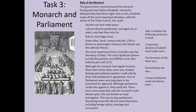The most important privy council role was Secretary of State, and the most significant person who held this position was William Cecil, who had the job until 1573 — you'll learn lots about him as the course goes on. The monarch had lots of regular income, but there were times when more was needed, usually in a time of war. Raising extraordinary taxation could only be done with parliament's agreement — this was basically a way for the monarch to raise more money in a crisis situation.